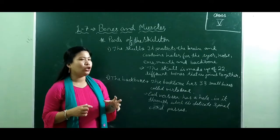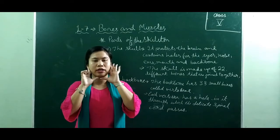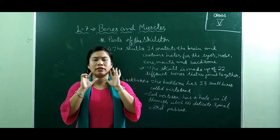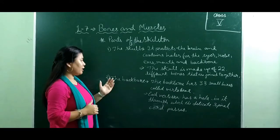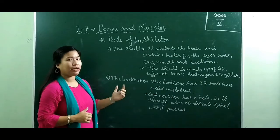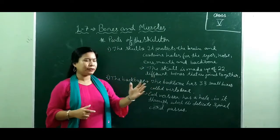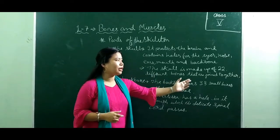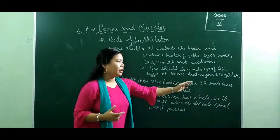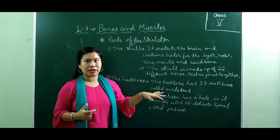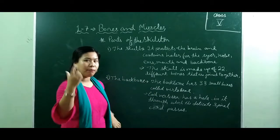The lower jaw bone is the only moving bone in the skull. That's all about the skull. Next is the backbone. The backbone has 33 small bones called vertebrae, which are joined together to form the backbone.